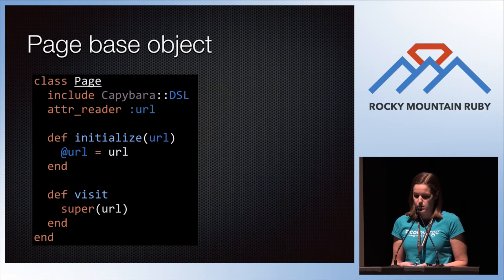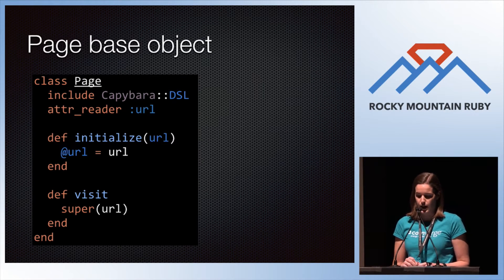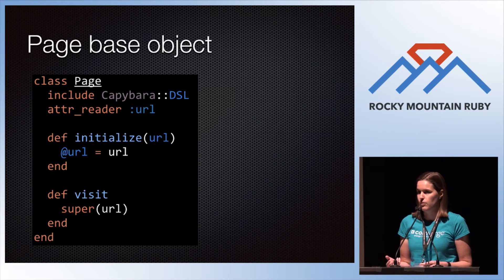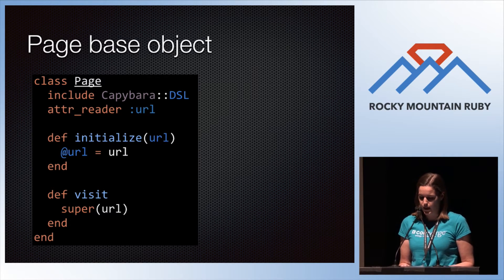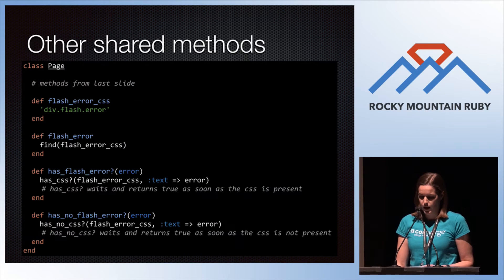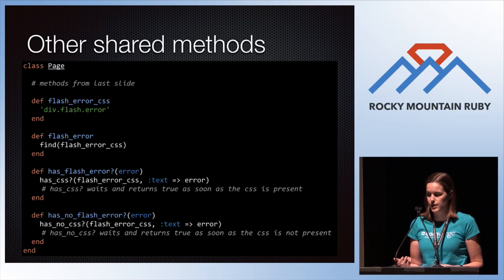The simplest way to handle this is just with inheritance. You can make a base page object that has the URL handling — now with a parameter instead of a constant — and it calls Capybara's visit method. And then you can add more to it, like the error handling for flash errors.